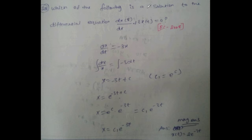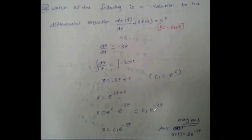Which of the following is a solution to the differential equation dx/dt + 3x = 0? Rearranging: dx/x = -3dt. Integrating: ln x = -3t + c. So x = e^c · e^(-3t). Setting e^c = C₁: x = C₁e^(-3t).